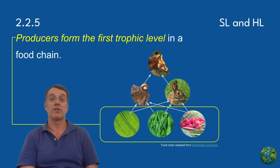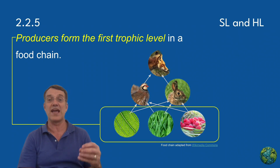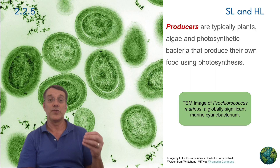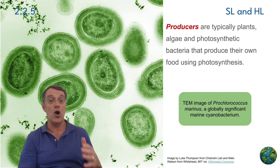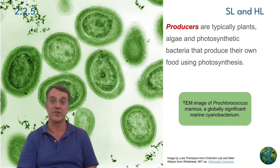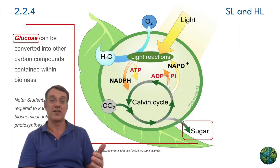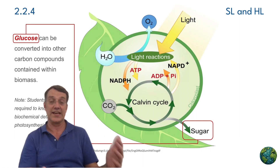Producers, which can include plants, algae, phytoplankton, and photosynthetic bacteria, form the foundation of ecosystem energy flow. They're unique because they can produce their own food through photosynthesis, making them autotrophs, which means self-feeders. When they store energy in glucose molecules, some of this energy can be converted into biomass — the total mass of living organisms in an ecosystem.